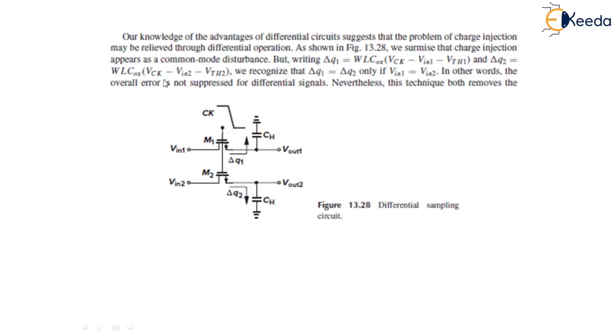This is the gate to source voltage. Gate to source voltage is V_CK minus V_IN2 in case of M2 and gate to source voltage in case of M1 is V_CK minus V_IN1. We recognize that ΔQ1 equals ΔQ2 only if V_IN1 equals V_IN2. In other words, the overall error is not suppressed for differential signals.